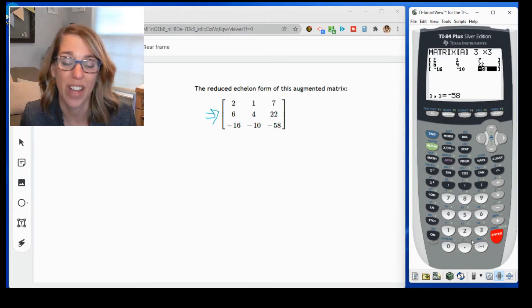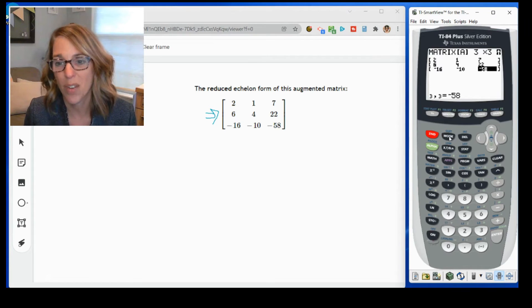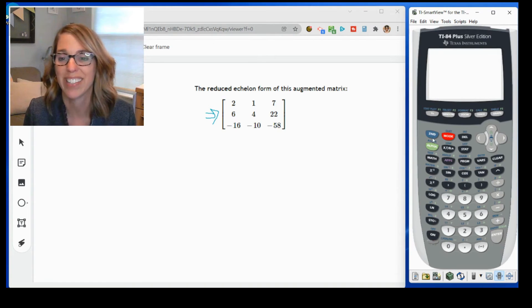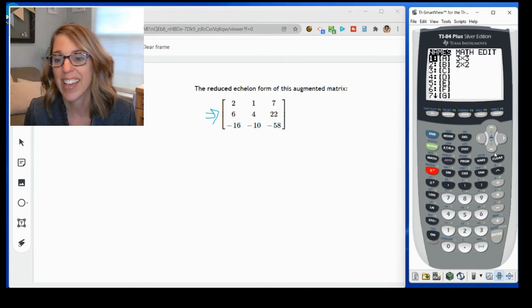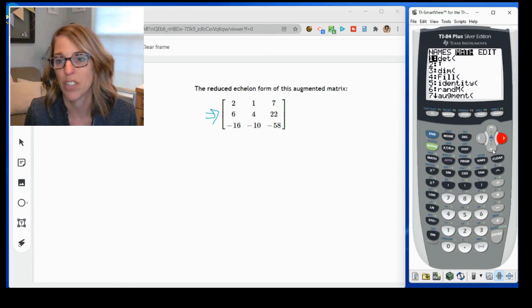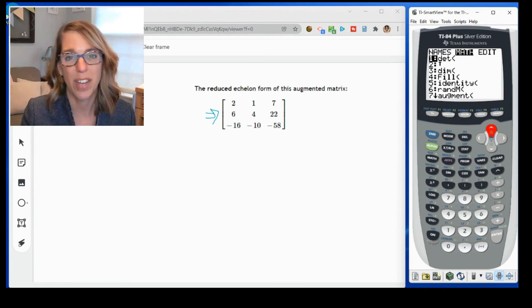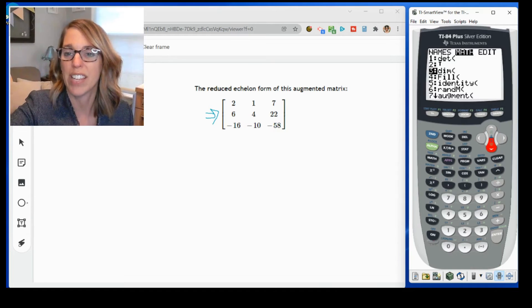Here's how we get to reduced row echelon form. I'm going to go into the home screen. So I second quit. I go back into my matrix menu. So I go second matrix, and I want to grab a math operation. I'm in the math menu, and I want to go ahead and grab an operation. I'm looking for RREF.